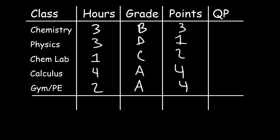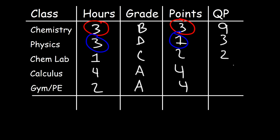Now the next thing you need to do is calculate the quality points. To do this, multiply the credit hours by the points for each letter grade. So three times three is nine. For physics, three credit hours times one point gives us three times one is three. Then one times two is two, four times four is sixteen, and two times four is eight.